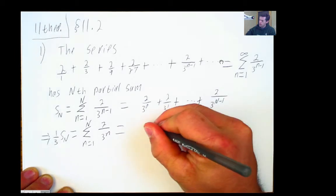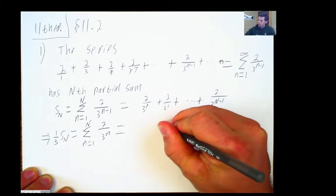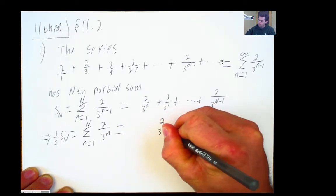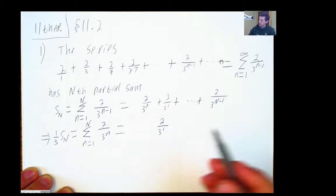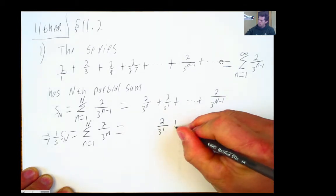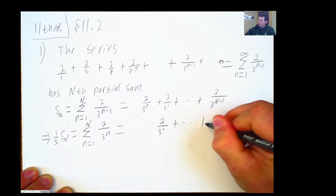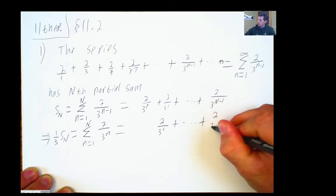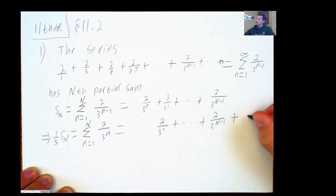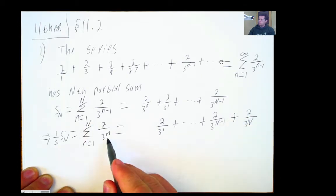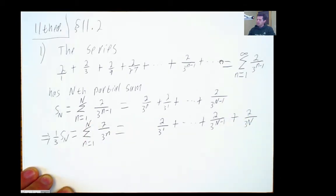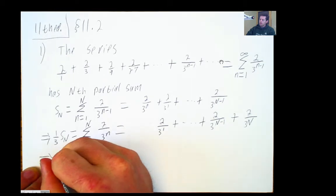Then this would say 2 over 3 to the 1st would be the first term in that. Going all the way out to 2 over 3 to the capital N minus 1. There will be one more term here, and that will be 2 over 3 to the capital N, right? The last term is capital N.